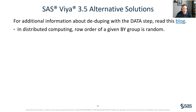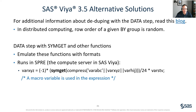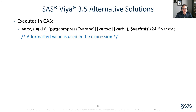For additional information about deduping with the data step, please refer to the following blog. In distributed computing, remember that row order of a given by group is completely random. Next, if you have a data step with SYMGET or other macro functions, these are not supported in CAS. You can emulate these functions with formats. The following example runs in SPRE because it contains a SYMGET function — a macro variable is used. A way around this is to use a format instead. This particular example executes in CAS by substituting a formatted value instead of the SYMGET function.